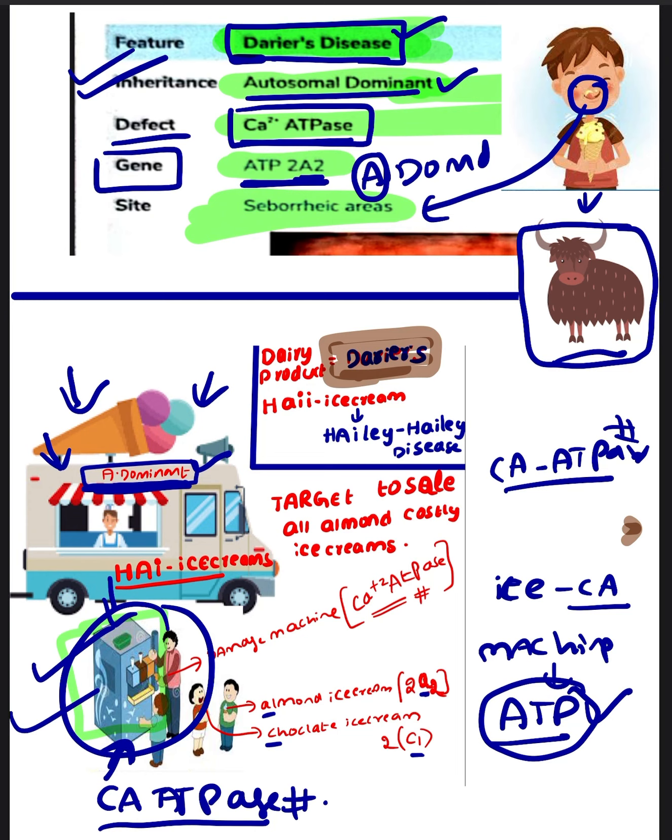Another mnemonic: For Darier's disease I said almond, whereas for Hailey disease I said chocolate. Without watching part 1, you can't watch part 2 because all the mnemonics are explained in part 1. This is just the continuation. So here it's an almond ice cream. A means A2, which is for Darier's disease. How can you remember Darier's disease? The mnemonic is: Darier's is like dairy products. Dairy products means you can easily remember ice cream products.